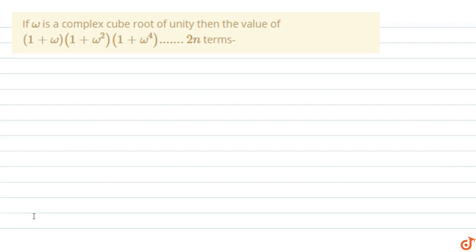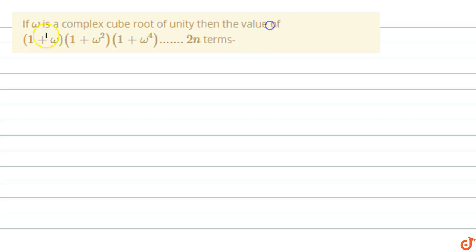In this question, if omega is a complex cube root of unity, then find the value of (1 + omega)(1 + omega squared)(1 + omega to the power 4)(1 + omega to the power 6), up to 2n terms.